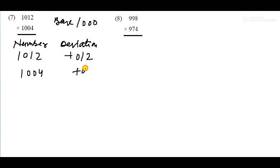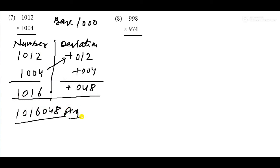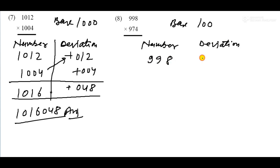Question 7. Numbers 1012 and 1004. Base is 1000. Deviation for 1012 is plus 012, deviation for 1004 is plus 004. Multiply: 4 times 12 equals 48, positive. Add crosswise: 1012 plus 004 equals 1016. Answer is 1016048.